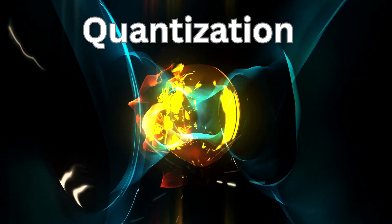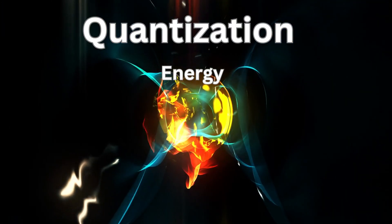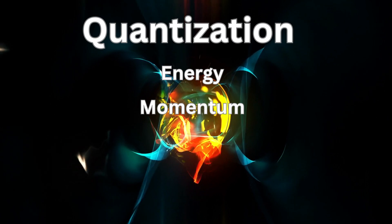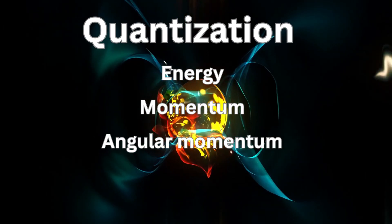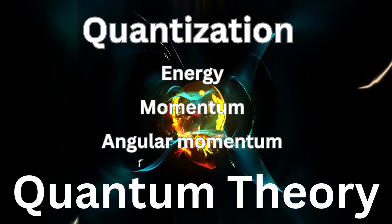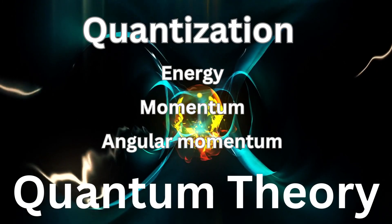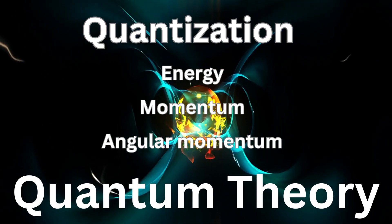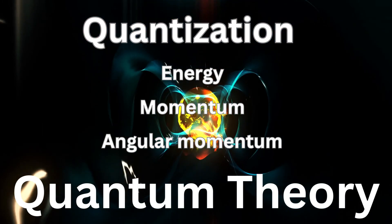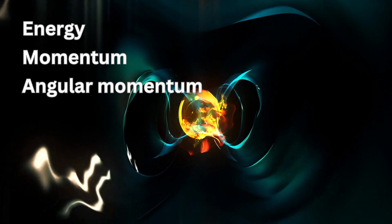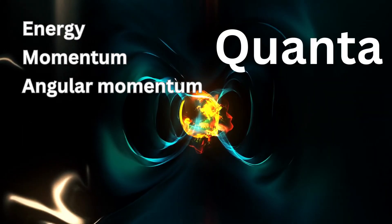The quantization of some physical quantities, including energy, momentum, and angular momentum, is a central idea of quantum theory. This implies that they cannot be continuous, and can only exist in certain discrete quantities. A common name for these discrete values is quanta.